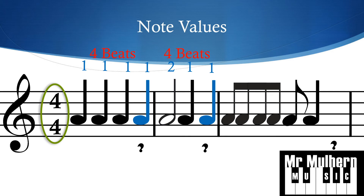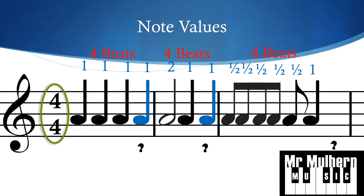Our last bar is definitely the trickiest one — still going to be worth four beats because we're working in four-four time. We've got five quavers to start with, so in total so far we've got two and a half beats. We've then got a crotchet worth one beat, so we've got three and a half beats so far, which means we need half a beat more to make four — which means we need to draw a quaver.